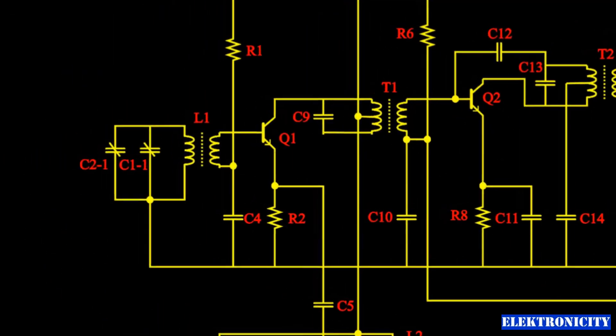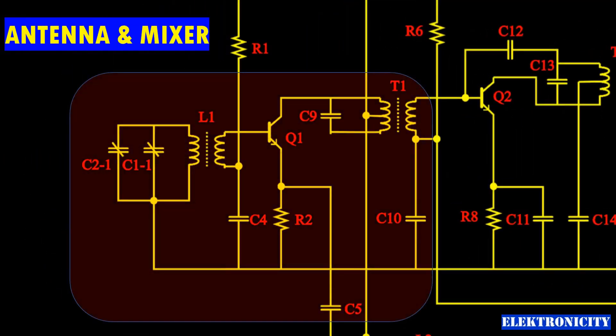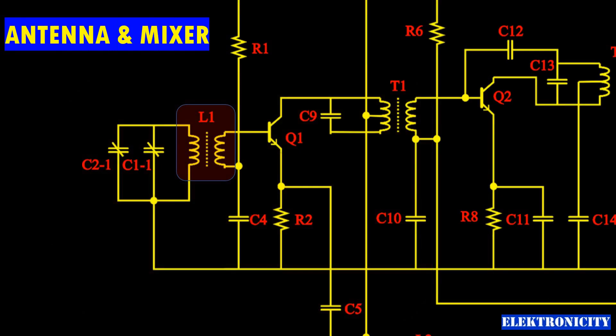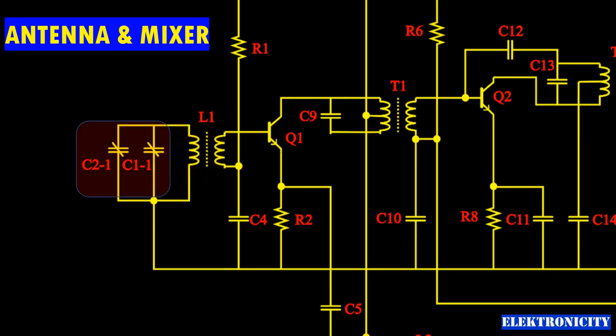Antenna and mixer: over here, L1 serves as a ferrite rod antenna, creating a resonant circuit with variable capacitors C21 and C11 in parallel. The secondary winding of L1 connects to the base of a mixer transistor Q1.